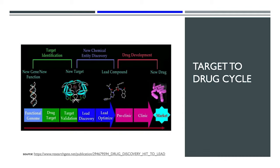This is the overall drug discovery cycle. Not all steps are always followed, but typically when a new drug comes to market, they identify some gene or function, figure out the target using various techniques, do a lot of validation, go through lead discovery and optimization, and then enter clinical studies.